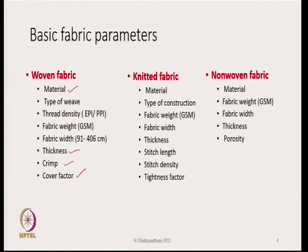For knitted fabric, the parameters are similarly material, type of construction, fabric weight or areal density, width, thickness, stitch length, stitch density, and tightness factor. For non-woven fabrics, parameters are material, fabric weight, fabric width, thickness, and porosity. Typically these are the key fabric parameters.